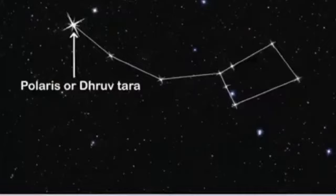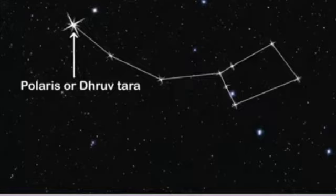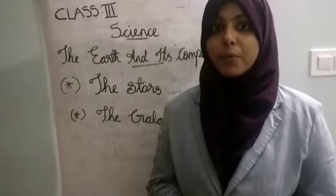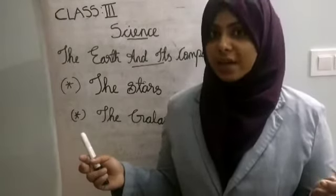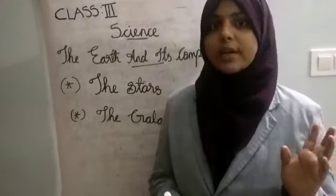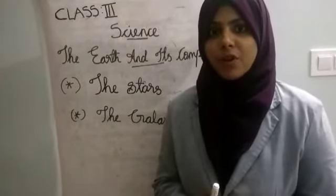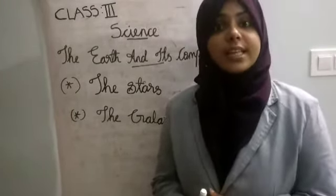Look at the picture. This is the pole star, or Dhruva tara. It is the only stationary star in the sky and it helps to find the north direction. In olden days, when there were no instruments like a magnetic compass, sailors used the pole star to find their direction.